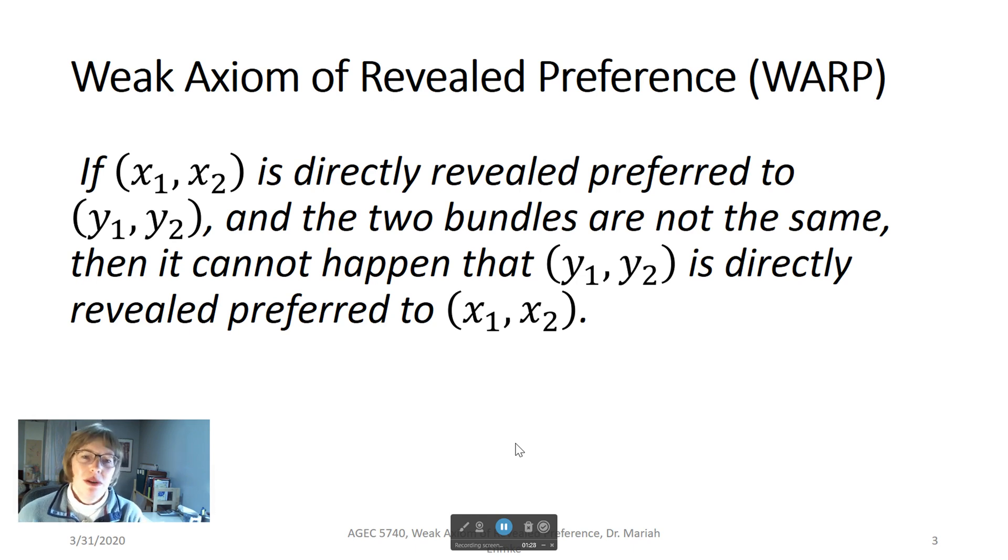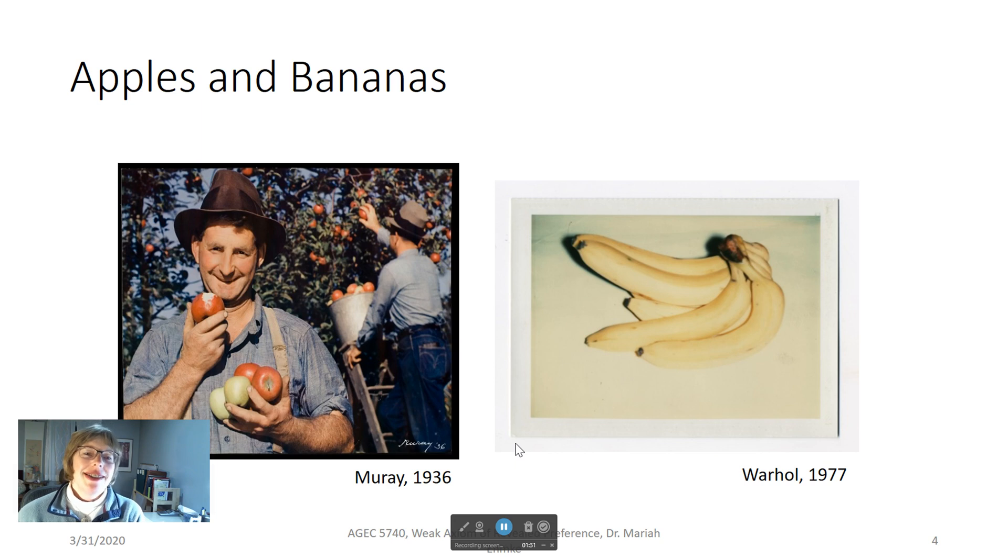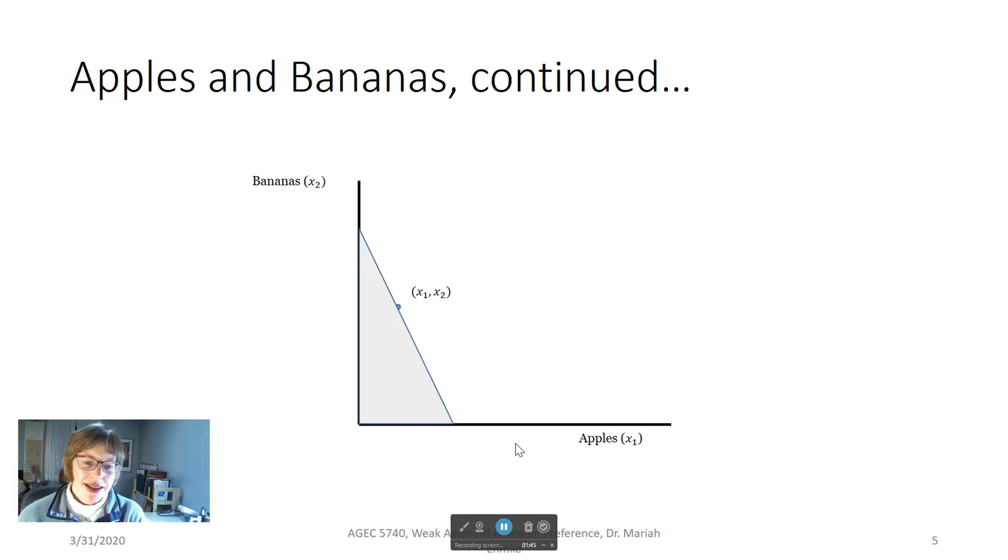So what does this mean in common language? Let's say a consumer really loves apples compared to bananas at least. Bananas just seem sort of plain and ordinary compared to a good, sweet, juicy apple. When the price of apples is high, such as in this graph where apples are represented by X1 and bananas X2 is low.